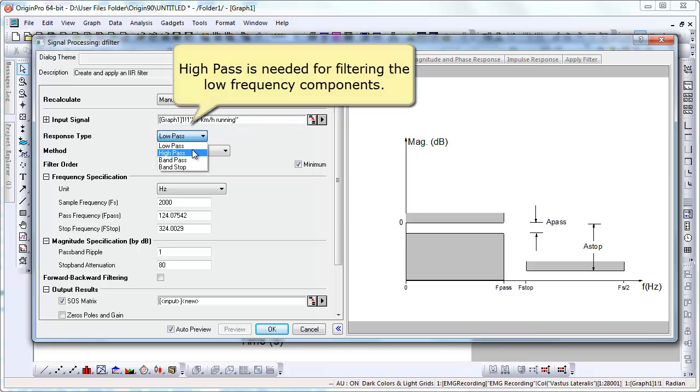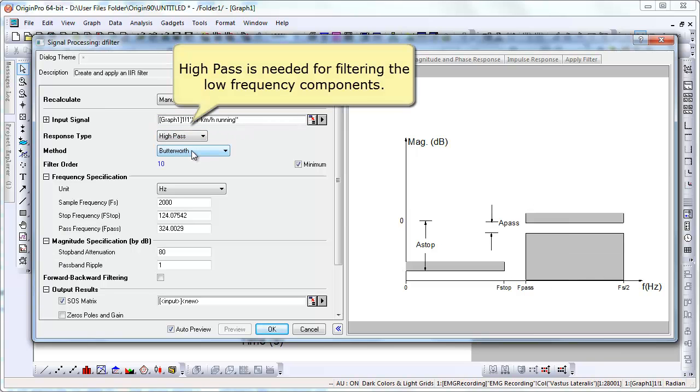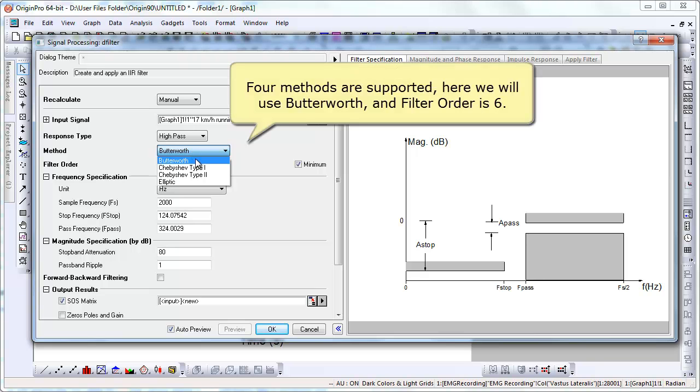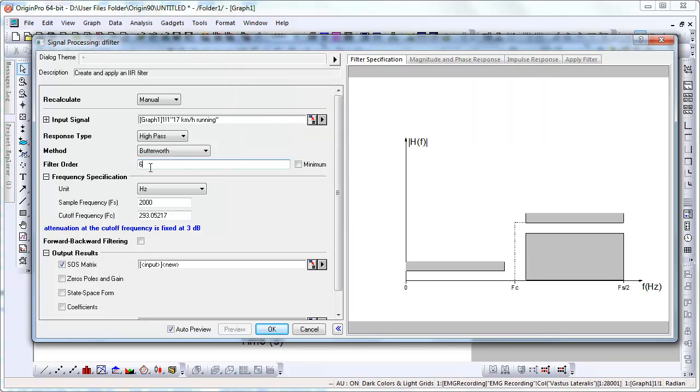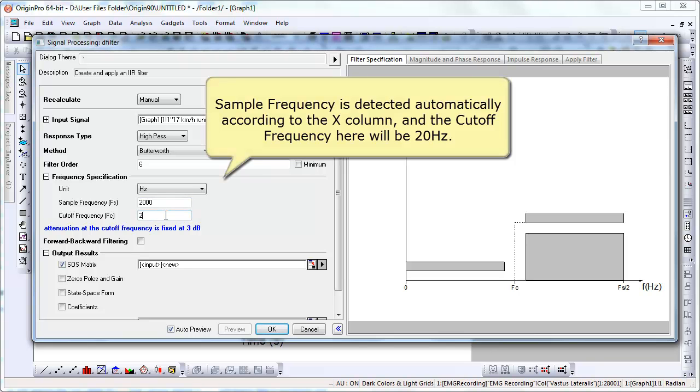Let's change the response type to high pass. Look at the different methods that are available. Change the filter order to 6. The sample frequency is detected automatically according to the X column.